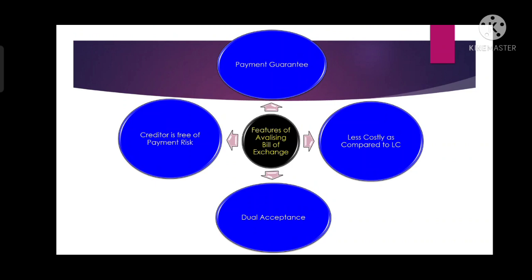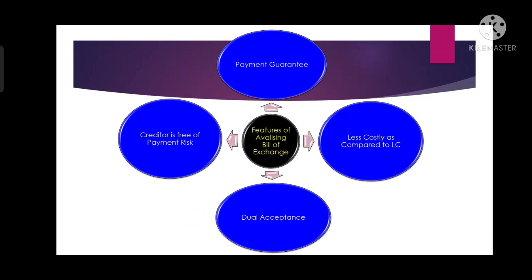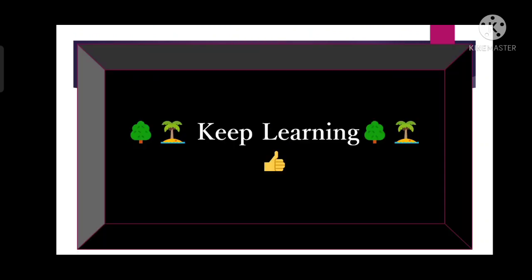The last feature is dual acceptance. The bill is accepted by the drawee as well as by the drawee bank. So the drawer benefits by getting dual acceptance. So this is all about my video. Keep learning.